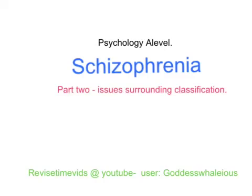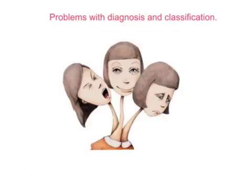Psychology A Level Revision: Schizophrenia Part 2 — Issues Surrounding Classification. This video is going to discuss the problems we have with diagnosis and classification surrounding schizophrenia. It involves the introduction of DSM and ICD, stigmatism and labelling surrounding schizophrenia, and the reliability of diagnoses.